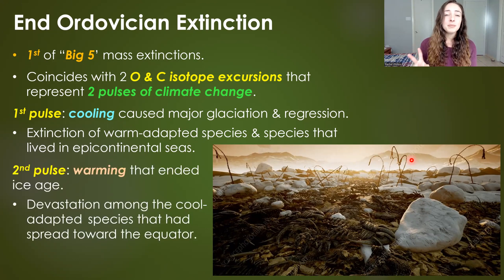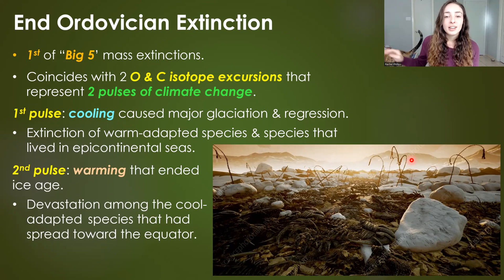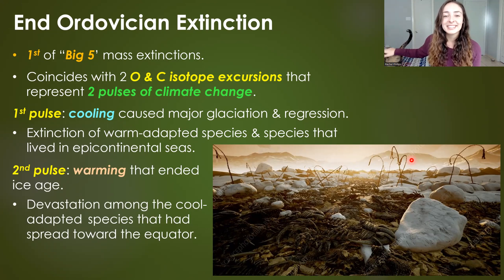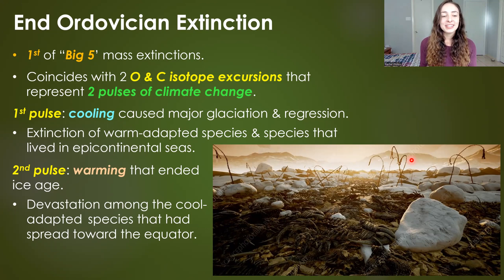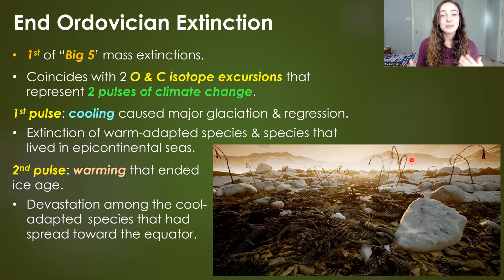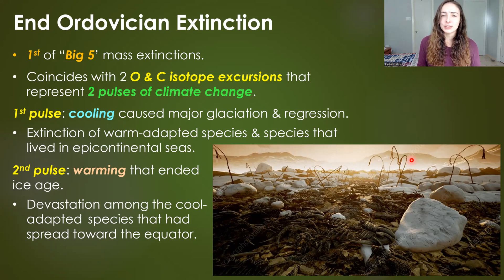The second pulse of climate change was a warming event that ended this ice age, and this caused devastation among the cool-adapted species that had just survived the first pulse of extinctions.